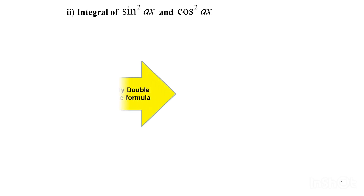We are still in subcompete 1.2, integration of trigonometric functions, part 2: integral of sin squared AX and cos squared AX. Here, we are going to learn how to integrate sin squared and cos squared. We need to apply a double angle formula.